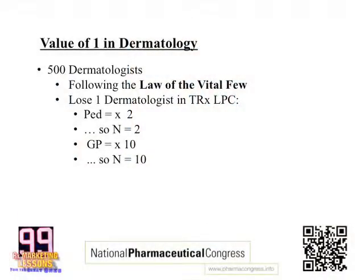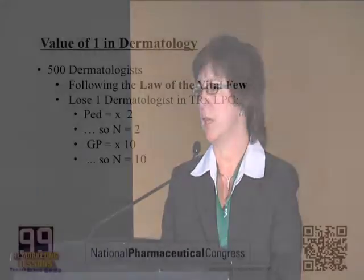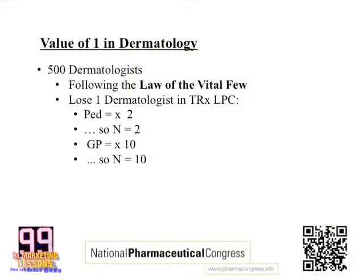What is the value of one in dermatology? There are about 500 dermatologists writing product in our marketplace and they do follow Pareto's rule. If we lose one dermatologist — taking the example of low-potency topical corticosteroids — it takes two pediatricians to make up the business of that one dermatologist. So the n of one is actually two. With GPs, we actually have to seek out 10 new GPs to replace the value of that one dermatologist. The end value is now 10.